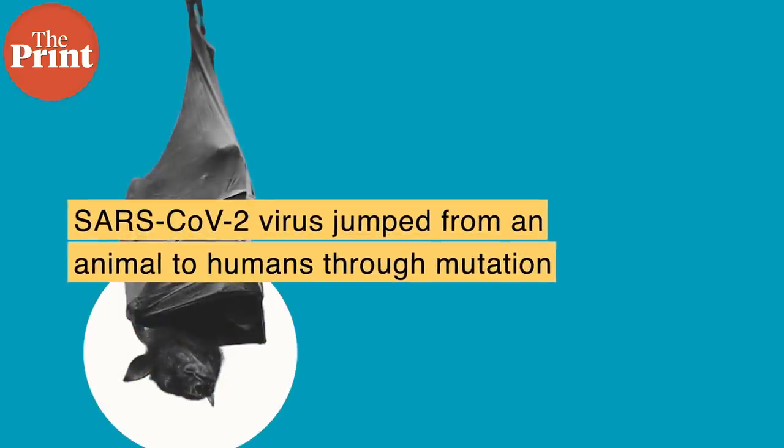Viruses undergo rapid mutation because they are very primitive and their method of replication is very prone to errors. These errors are reflected in their genome sequences. In fact, it is through mutation that the SARS-CoV-2 virus and other zoonotic viruses have jumped from animals to humans in the first place. Viruses mutating is not uncommon and is completely expected.